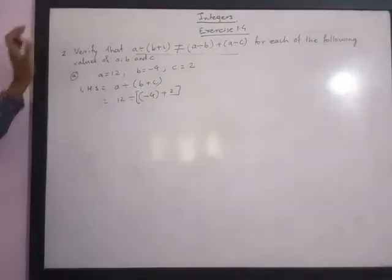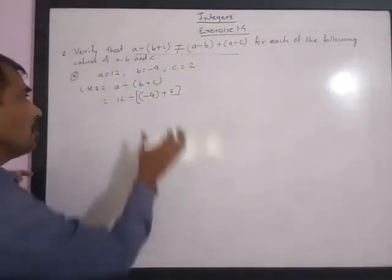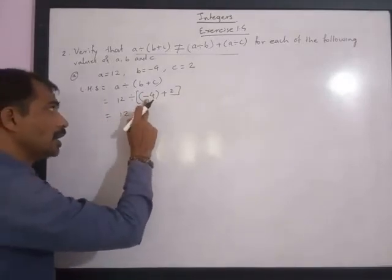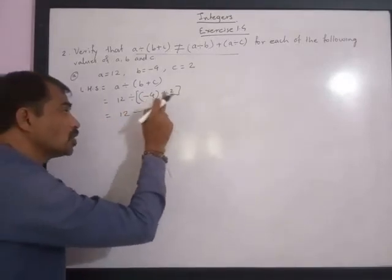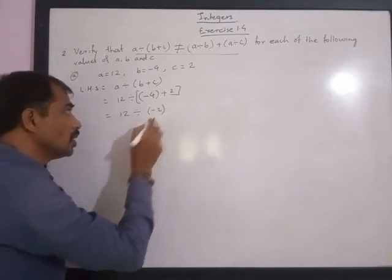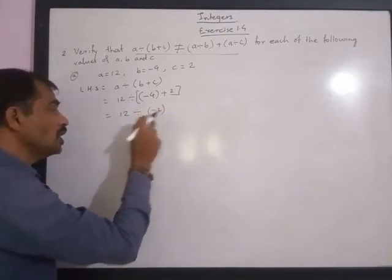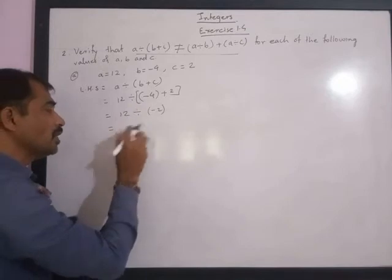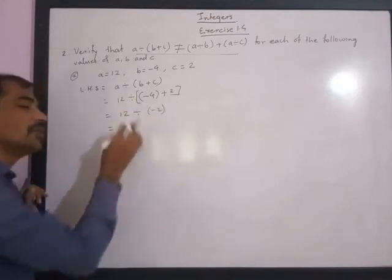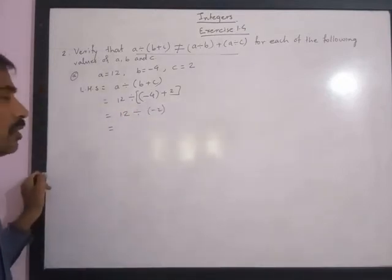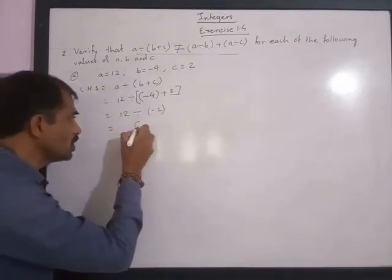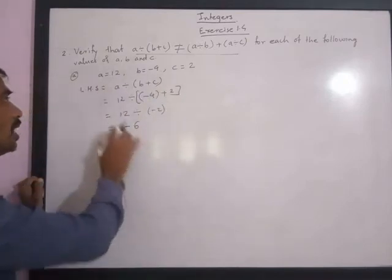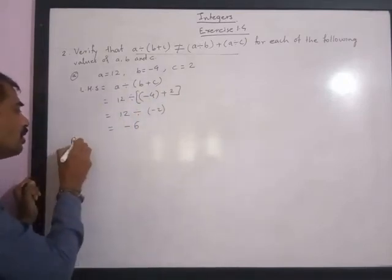The left hand side is a divided by bracket b plus c, which is 12 divided by bracket negative 4 plus 2. We solve the bracket first: negative 4 plus 2 is negative 2. Now, a positive integer divided by a negative integer requires dividing whole number by whole number and giving the negative sign. So 12 divided by 2 is 6, giving LHS equal to negative 6.